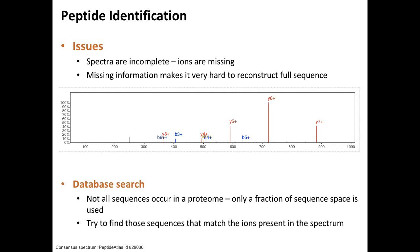The idea with database search is that we only consider sequences that should occur because we know they are part of the genome and thus the proteome. We try to find, in the database of all potential protein sequences, those that would actually fit this spectrum even though it does not contain all the information. There might be ambiguities — database search will always give you a result, and you will have to make sense of it.